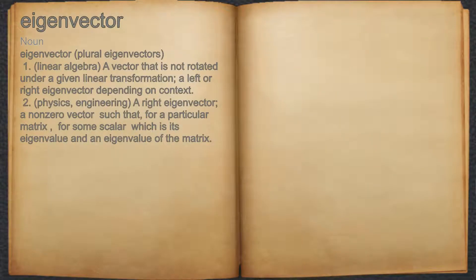Eigenvector. Noun. 1. Linear algebra: a vector that is not rotated under a given linear transformation; a left or right eigenvector depending on context.